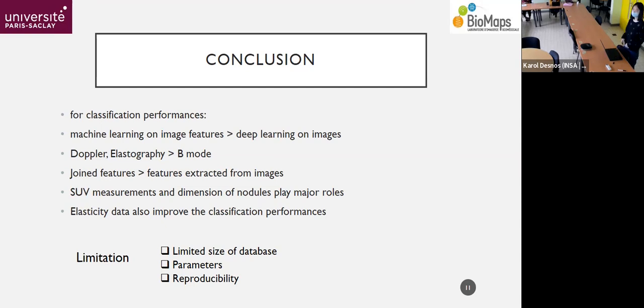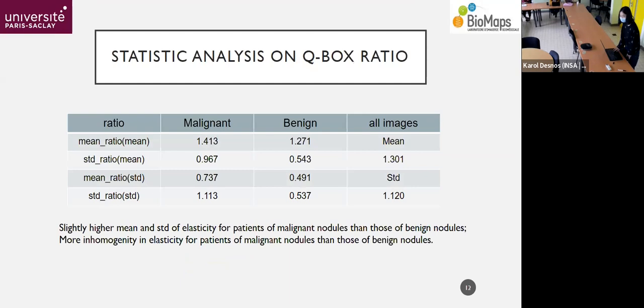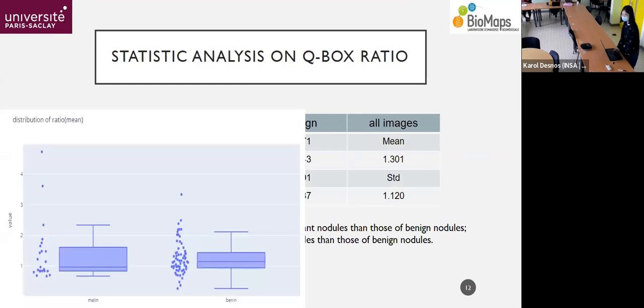So maybe there are still many room to adjust the parameter for the machine learning methods so that we can have better or more stable results. And last problem is reproducibility because for the last part of the study on the joint features, we haven't done the cross-validation. So maybe this is something we need to do later. So that's all I did in my internship. So thank you for your attention.